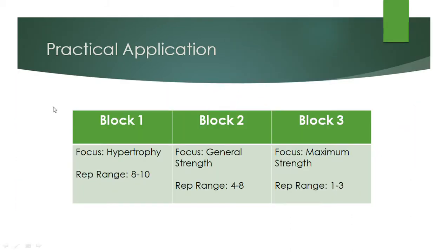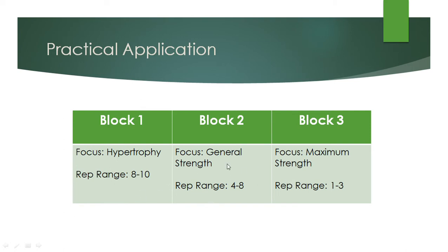Practically, what would this look like? If we have three blocks of a few weeks each and we're trying to peak our maximum strength, we can start with a hypertrophy block where rep ranges are a bit higher, so we gain some muscle size and increase the size of the muscle fibers. Then we can do some general strength training in the four to eight rep range to start training neural qualities. Finally, we can really peak those neural adaptations by training heavy in the one to three rep range. This approach should improve our maximum strength more than if we only did maximum strength training for months and years on end.